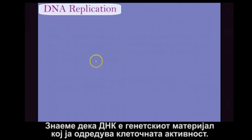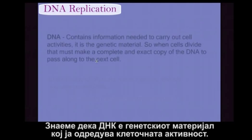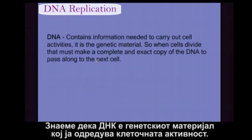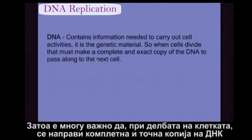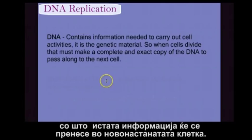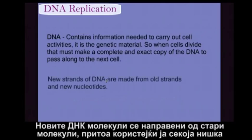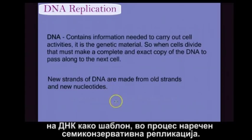We know that DNA is the genetic material, and that it directs cell activity. Therefore, it's very important that when the cell divides, it passes along a complete and exact copy of these instructions to the next generation of cells. To ensure that this happens, the new molecules of DNA are made from the old molecules, using each strand of DNA as a template in a process called semi-conservative replication.